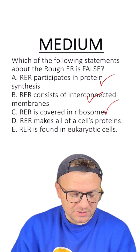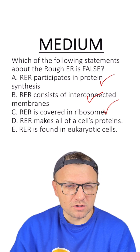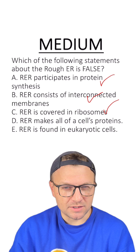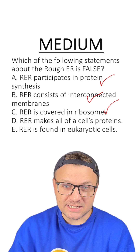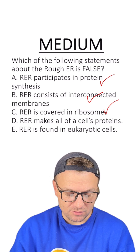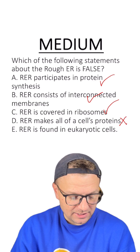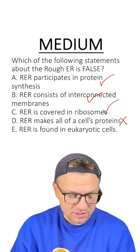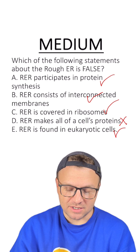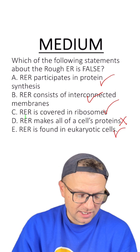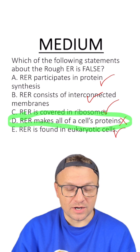Option D: rough ER makes all of a cell's proteins? Well, it doesn't make all of the cell's proteins — there are free-floating ribosomes that make cytoplasmic proteins, so that looks like the answer because it's not true. Option E: rough ER is found in eukaryotic cells? It definitely is found in eukaryotic cells. This is why D is the right answer.